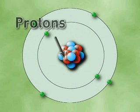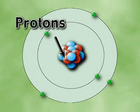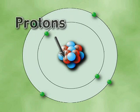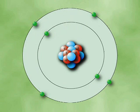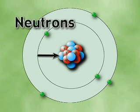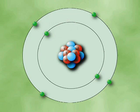Protons are positively charged subatomic particles located in the nucleus of an atom. Neutrons are subatomic particles that have a neutral charge. They're also located in the nucleus.